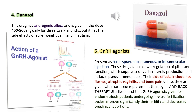Number 4: Danazol. This drug has an androgenic effect and is given in a dose of 400–800 mg daily for 3–6 months, but it has the side effects of acne, weight gain, and hirsutism.